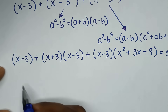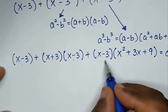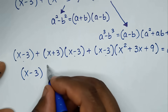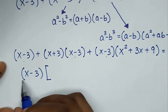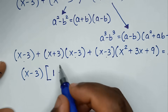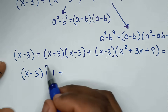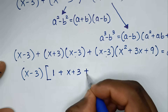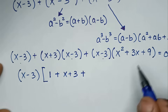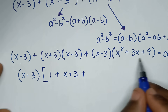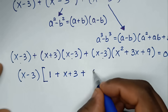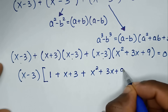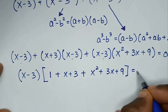Then in the next step, x minus 3 is common, so we take (x minus 3) out of the bracket. This divided by this is 1, plus this divided by this is (x plus 3), then plus this divided by this is the quadratic expression which is x squared plus 3x plus 9, bracket, is equal to 0.